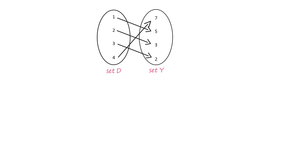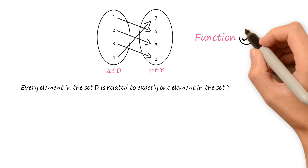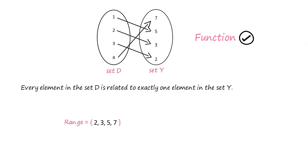Consider the sets D and Y related to each other as shown. Can we consider this relation as a real valued function? Pause this video and give it a thought. Clearly, every element in the set D is related to exactly one element in the set Y, so the given relation is a function. The range of this function consists of the elements 2, 3, 5, and 7.